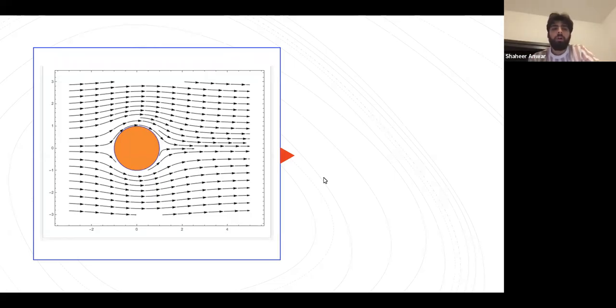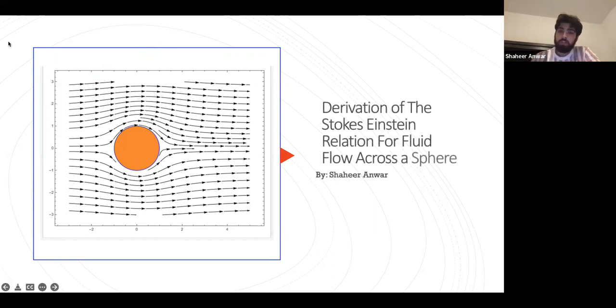Hello everyone, my name is Shahir Anwar and this is my BME325 final project for part one. This is the derivation of the Stokes-Einstein relation for fluid flow across a sphere.